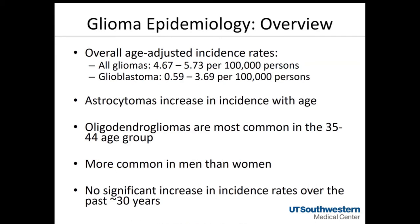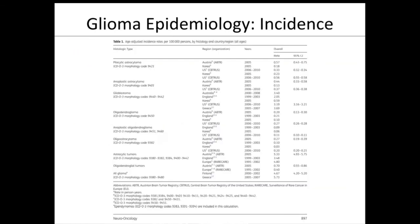Gliomas increase in incidence with age. Oligodendrogliomas have a sweet spot in the 30 to 40-year age group. In general, gliomas are more common in men than women. There has not been any significant increase in incidence rates over the past 30 years, despite frequent discussion about cell phones and other environmental factors.